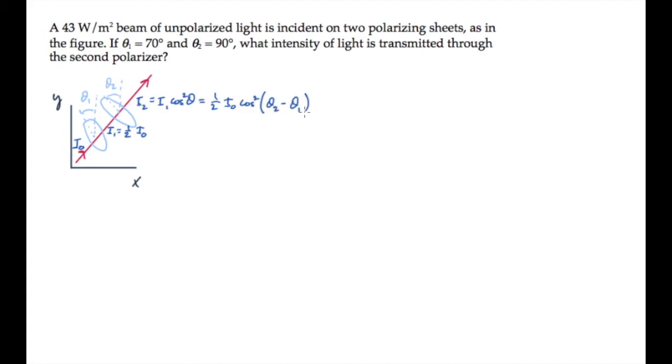So we find that after the second polarizer, the light will be polarized along the direction of theta2 and have an intensity of 19 watts per square meter.